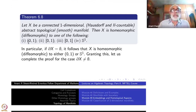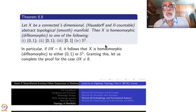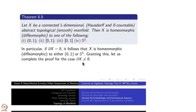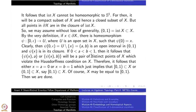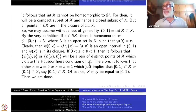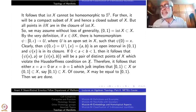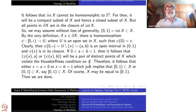That completes the picture — these four must be all of them. So we only need to classify connected one-dimensional manifolds which are boundary-less. I have given a slightly different argument here using Hausdorff-ness: if you have a compact subset of a Hausdorff space, then it is a closed subset. This kind of argument we will also use later.